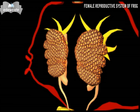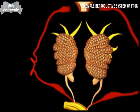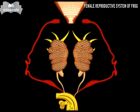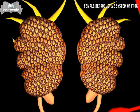The ovary is a sac-like structure with several lobes. It is grayish or blackish in color. Inside the ovary, numerous chambers called follicles are present. Each follicle gives rise to a single ovum.